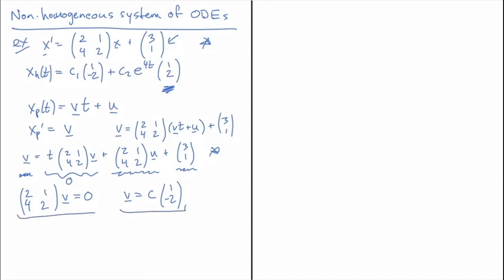Now that we know v = c·(1, -2) from solving the first piece, we plug that into the remaining constant equation: c·(1, -2) = (2,1; 4,2)·u + (3, 1).